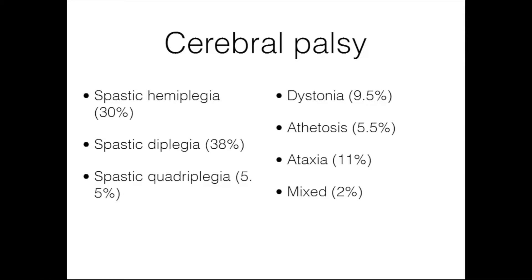This gives a breakdown of the frequency of the different types of cerebral palsy. Spastic diaplegia is actually the most common at 38%, followed by spastic hemiplegia at about 30%. About 5.5% is spastic quadriplegia. 9.5% is dystonia, 5.5% is athetosis, 11% is ataxia, and in 2% of cases we see a mixed type, such as mixed spastic quadriplegia with athetosis.